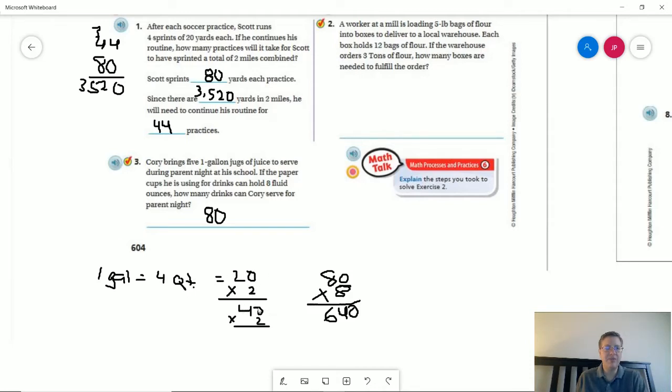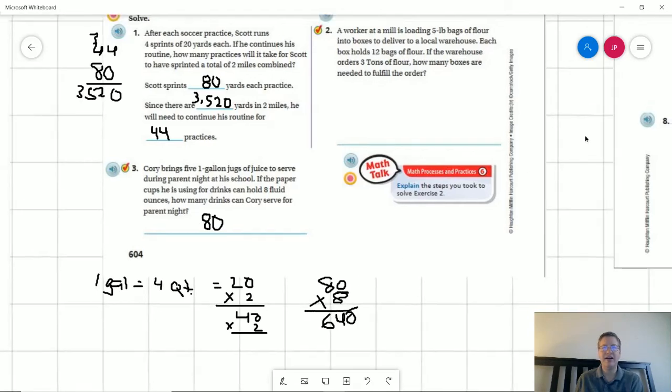Double that to get the number of pints, double it to get the number of cups. If we wanted to go all the way to ounces then we would multiply by eight to get 640 ounces but we don't need to do that because we are just going to a cup. So eight fluid ounces is worth a cup, so we don't need to go all the way to finding the number of ounces. That would be 80 cups that we would use.